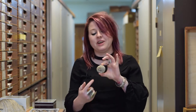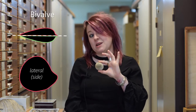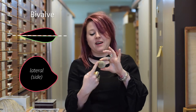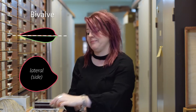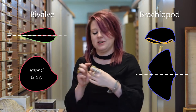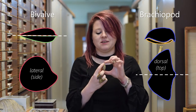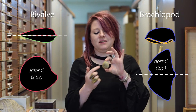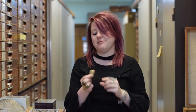The easy way to tell the difference: with a bivalve you've got two shells that are the same, and they are not symmetrical down the midline. With a brachiopod you have two shells that are different, but they are perfectly symmetrical down that midline. There are some internal anatomy differences too, but from the outside that's the easiest way to tell.